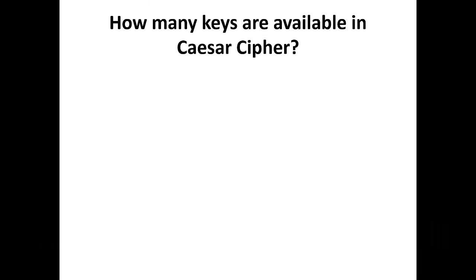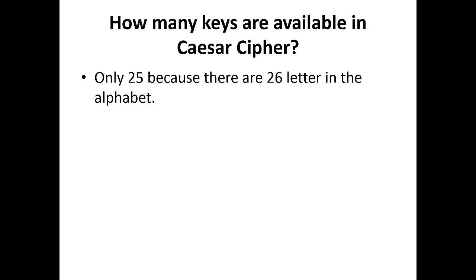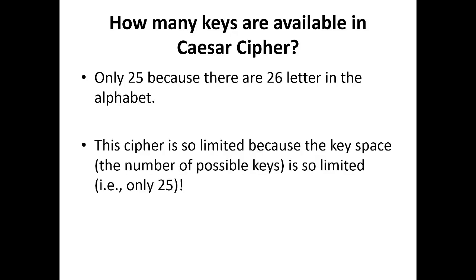Here is a quick question: how many keys are available in Caesar cipher? The answer is there are only 25, because there are only 26 letters in the alphabet. This is why this cipher is so limited — the key space, meaning the number of possible keys, is only 25. An attacker only needs to try 25 different times to find the original plain text.